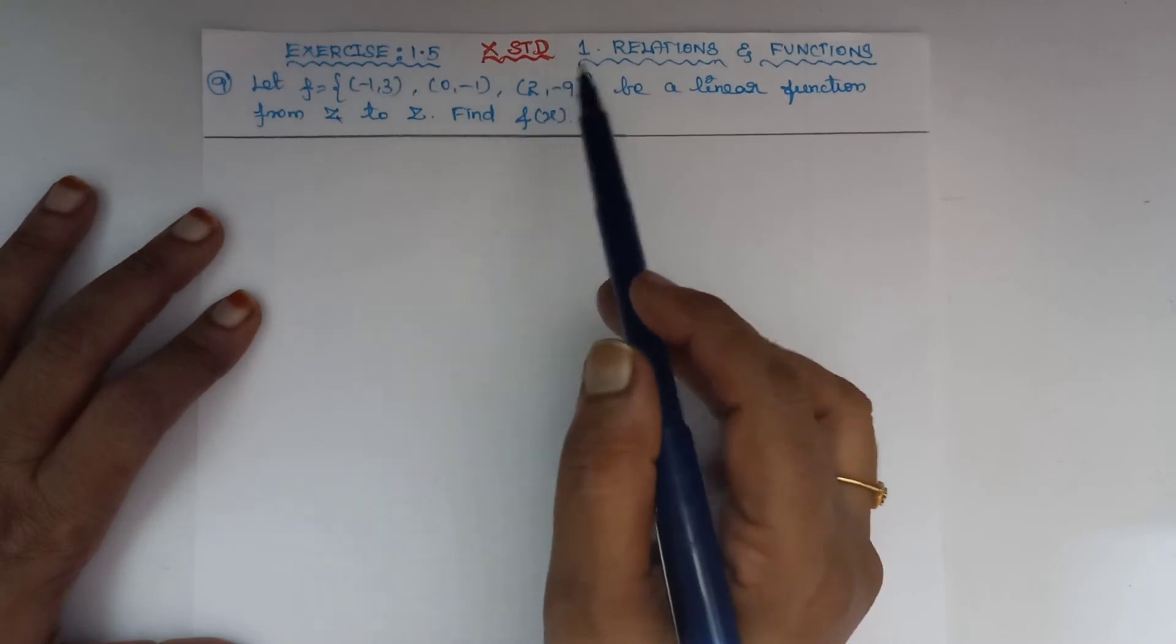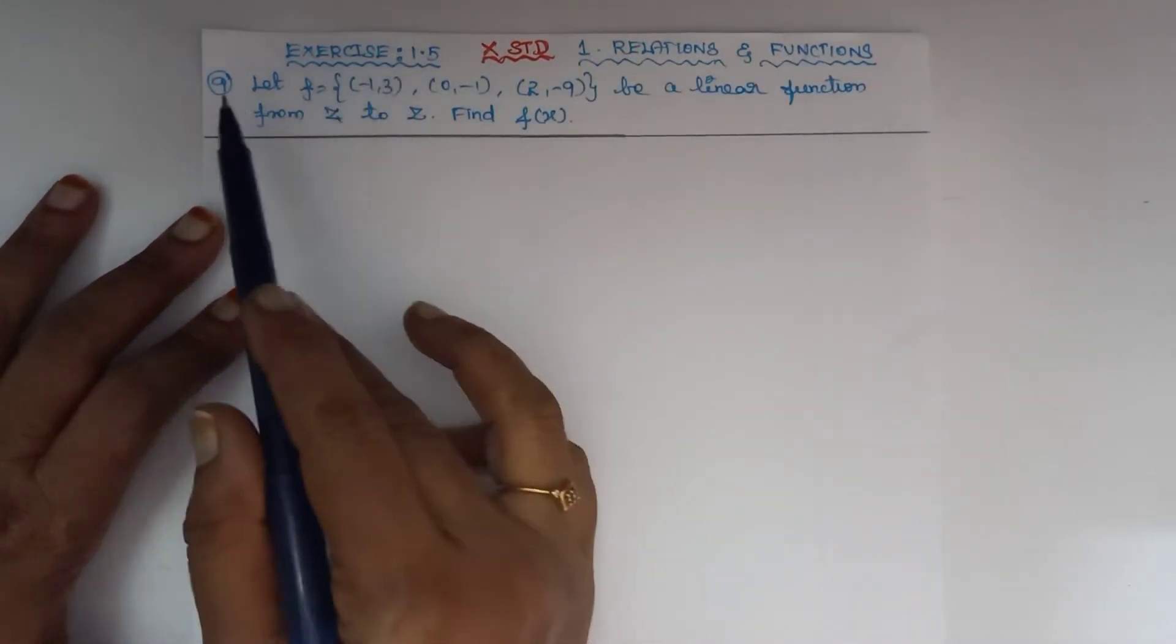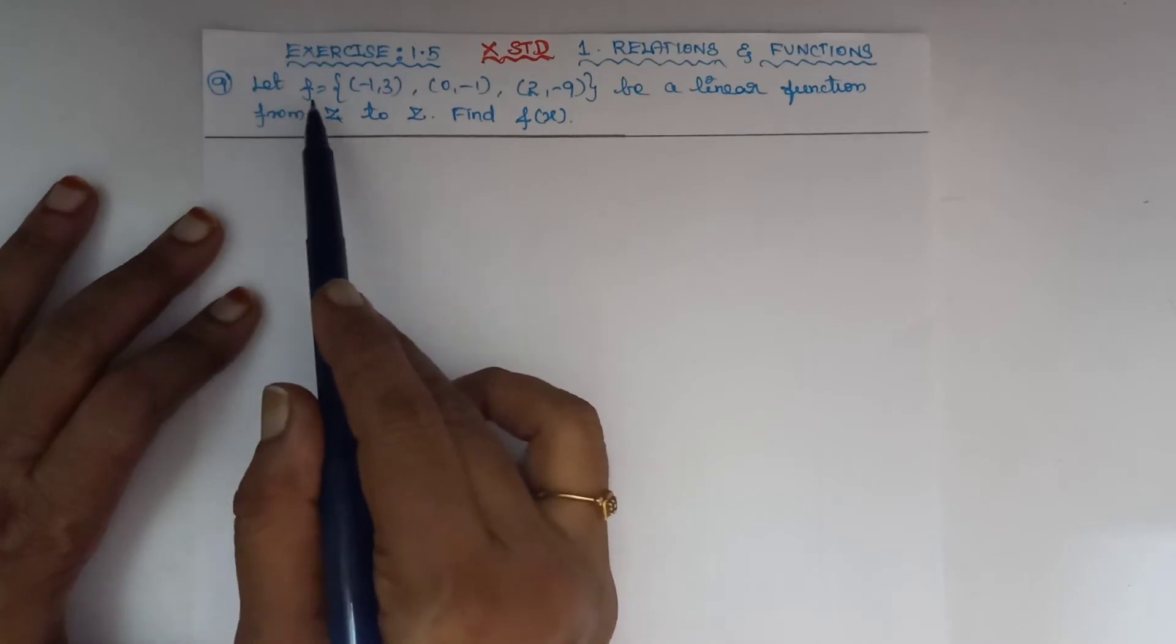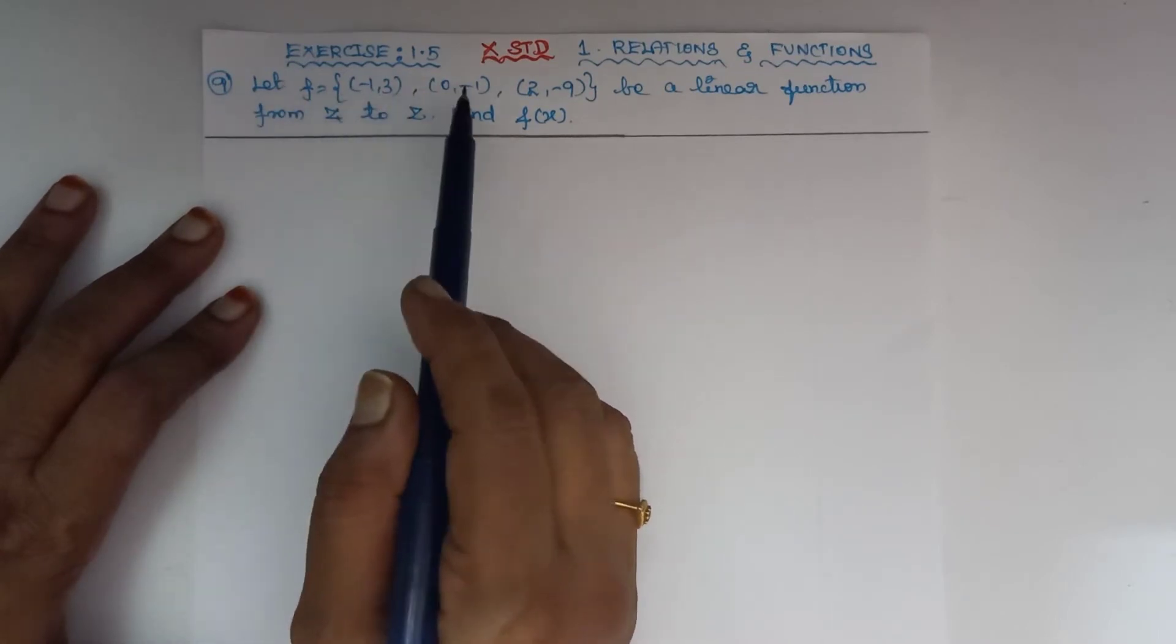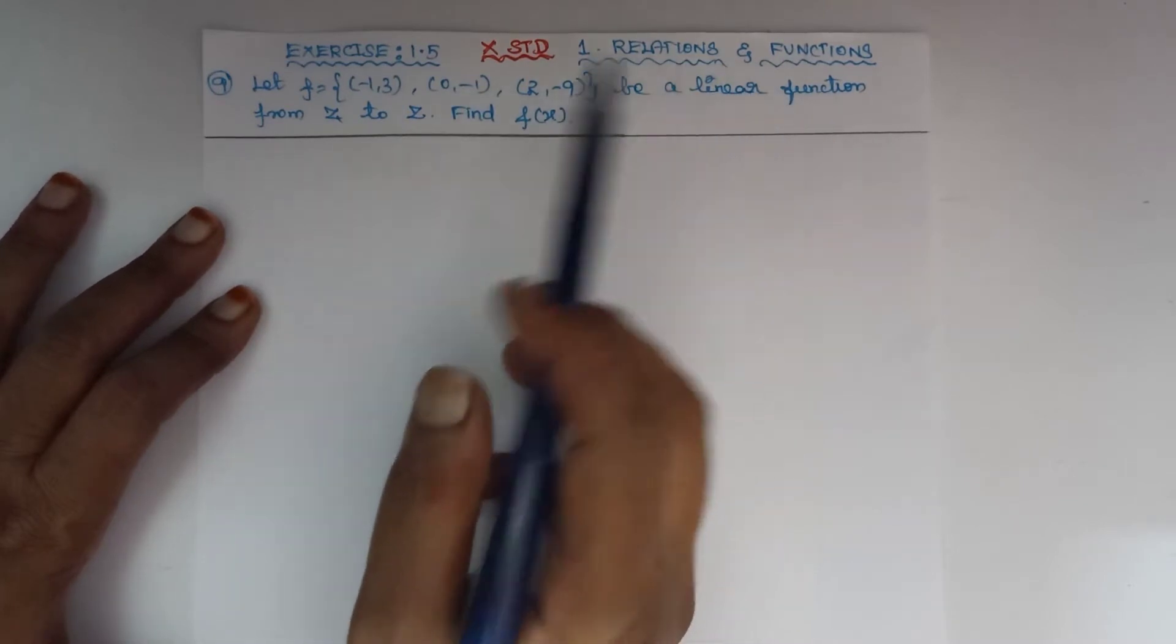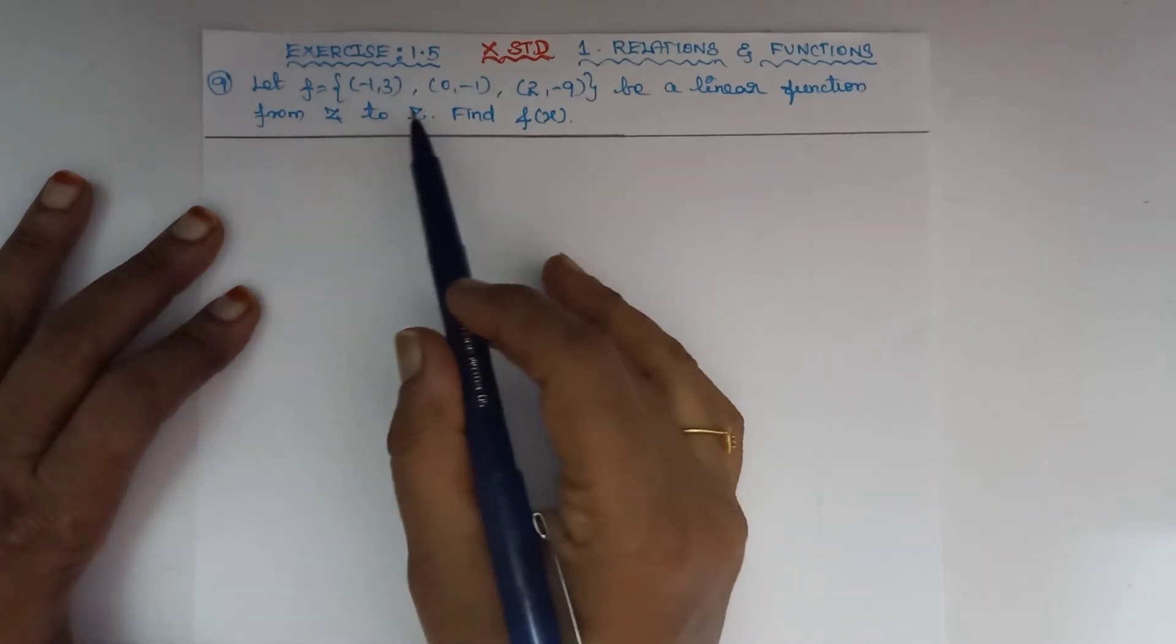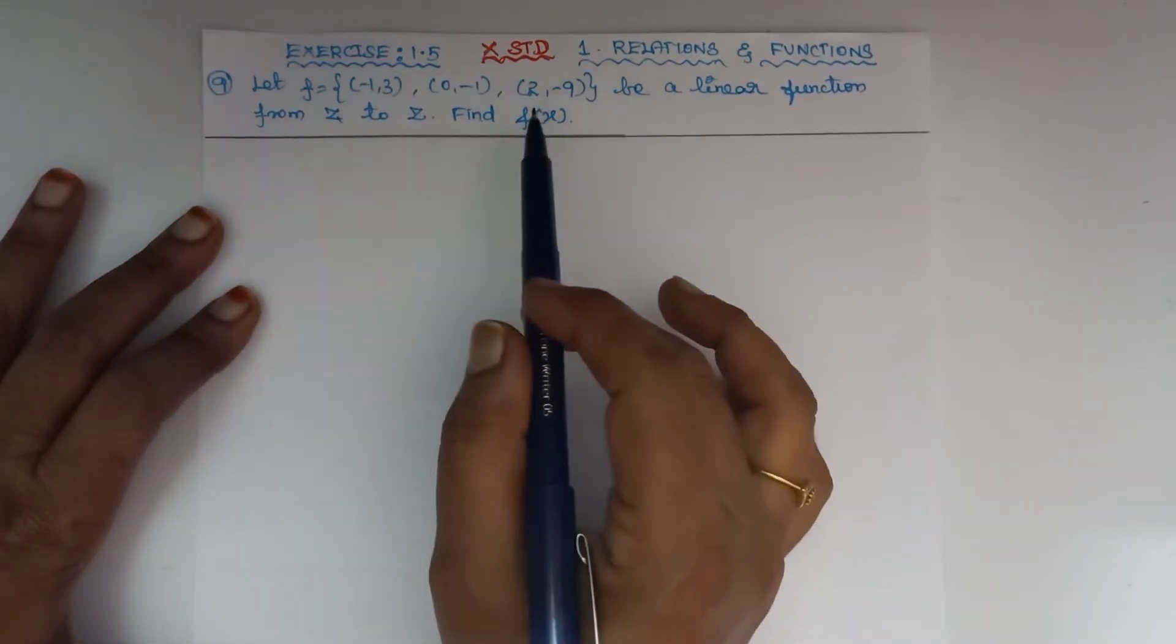Good morning to everyone. 10th standard, first chapter, relations and functions, exercise 1.5, problem 9. Let f equal to {(-1, 3), (0, -1), (2, -9)} be a linear function from Z to Z. Find f(x). This is a linear function from Z to Z given in ordered pairs.